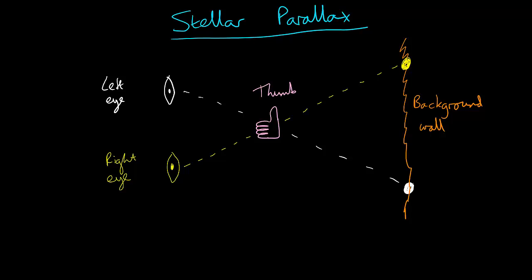If you move your thumb further away from your face, it will appear to move less against the background. This effect is called parallax and can also explain why when you're driving along a road, the cars in the field nearby seem to be moving away at